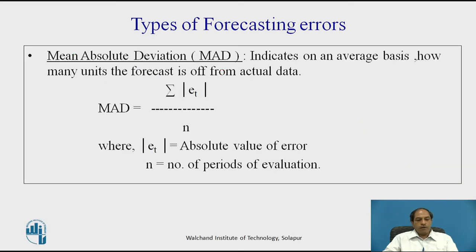The second error is Mean Absolute Deviation (MAD), which indicates on average how many units the forecast is off from actual data. It does not consider positive or negative sign — it takes the absolute value, which is why it is called Mean Absolute Deviation. MAD = Σ|et| / n, where |et| is the absolute value of the error and n is the number of periods of evaluation.